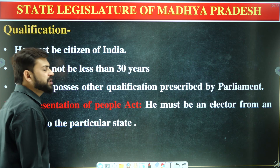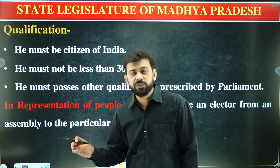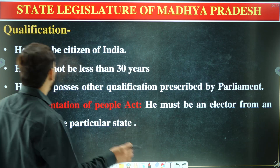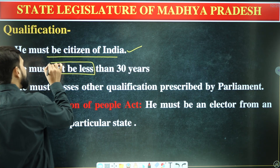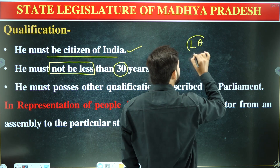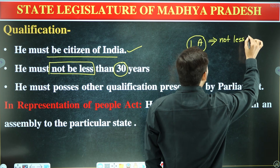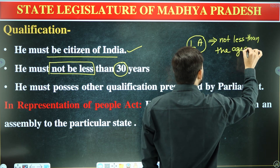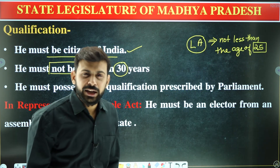Now let's talk about qualifications for membership. If you want to be a member of the legislative council, you must be a citizen of India and not less than 30 years of age. Compare this with the legislative assembly, where the minimum age was 25 — similar to the difference between Lok Sabha (25 years) and Rajya Sabha (30 years).